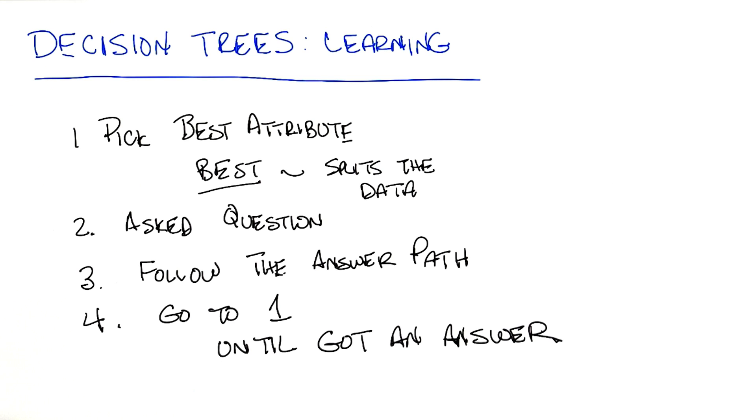And that is an algorithm. So you pick the best attribute, and you actually define what best attribute was. You wanted to pick one that would somehow eliminate at least half of the things that you might worry about, and keep the other half in play. You ask the specific question, you follow the path to that, and then you went back and you picked another attribute, and so on and so forth, until you got an answer that you wanted to. That's an algorithm, and that's an algorithm that we might use to actually build a decision tree.